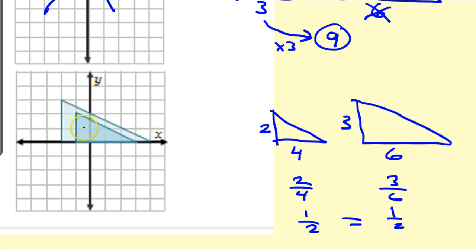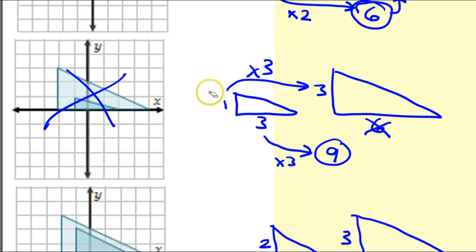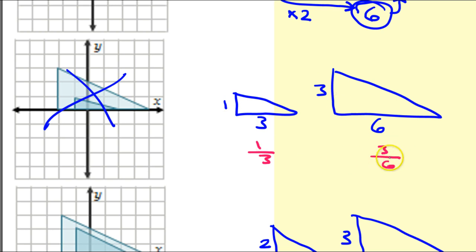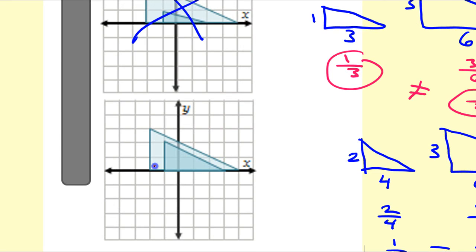So we could have done it the same way on the other problems — instead of looking at how the 1 becomes a 3 and doing the scale factor that way. What I could have done instead, maybe more simply, is look at the small triangle and say this is a ratio of 1 to 3, and then the big triangle is a ratio of 3 to 6. 3 to 6 is one half; 1 to 3 is one third. One third does not equal one half, so that is not a dilation. So this last one is the answer.